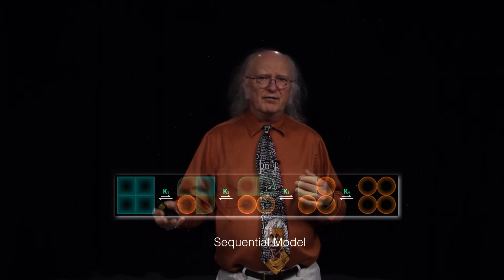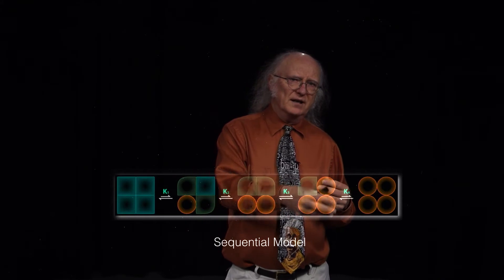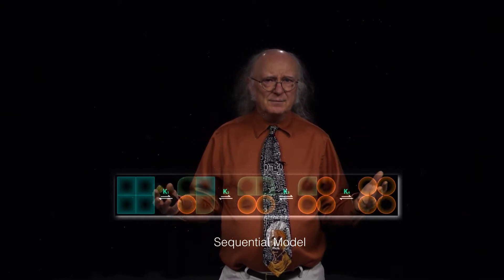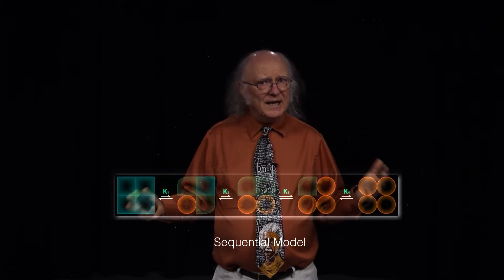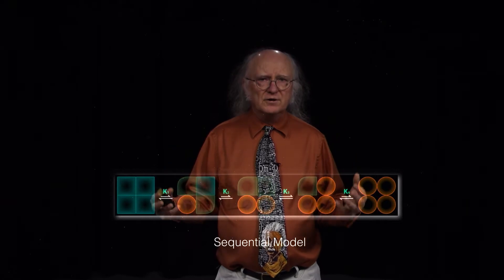In the case of oxygen binding to hemoglobin, binding of one oxygen had the effect of changing the affinity of binding of hemoglobin for other oxygens. The sequential model can also be relevant for enzymes, because enzymes like hemoglobin can also have multiple subunits.